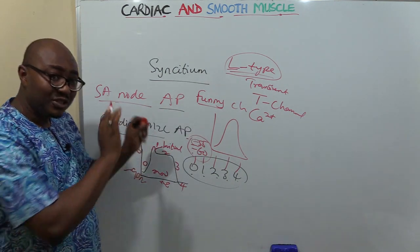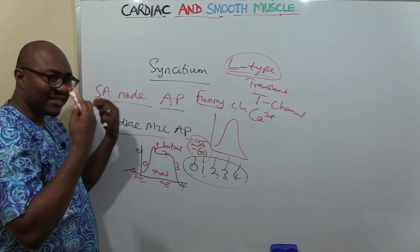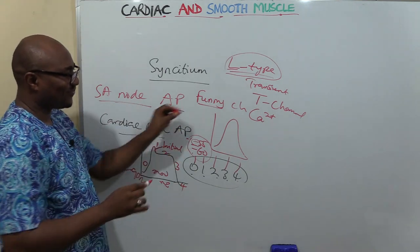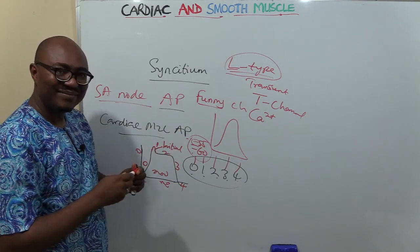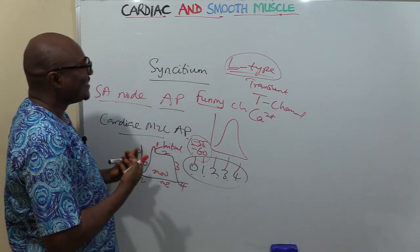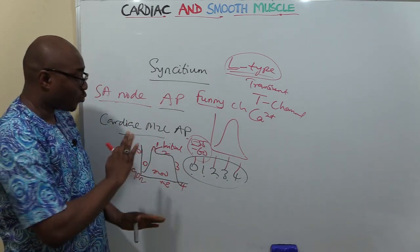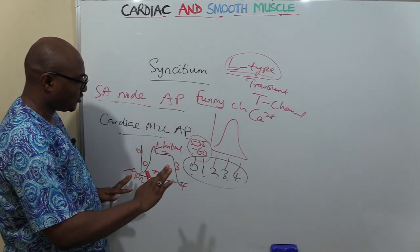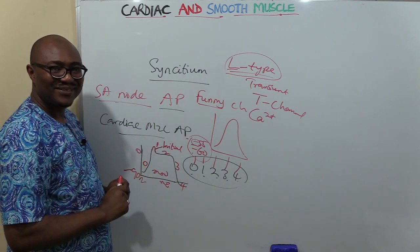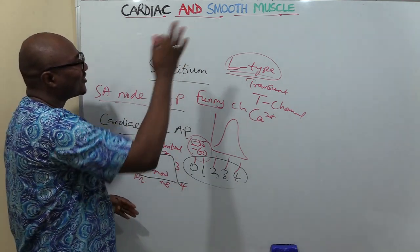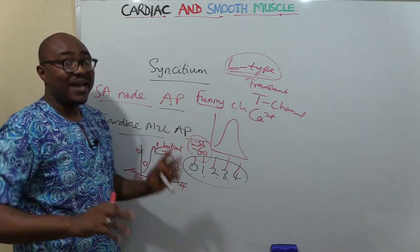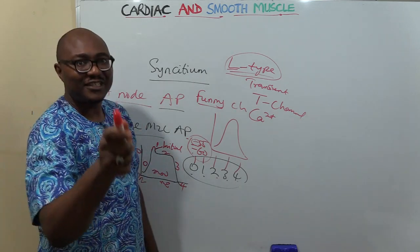You need to know the SA node action potential well — internalize what causes the funny sodium channels and the rest. Next, we're going to look at the mechanism of contraction of cardiac muscle, then briefly cover smooth muscle. Don't go anywhere after this break.